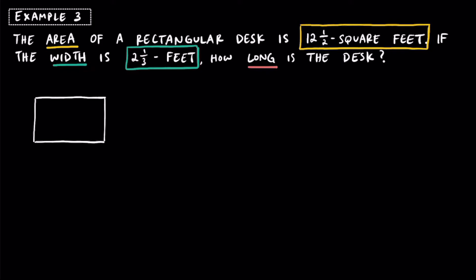We have a rectangular desk, so I'm drawing a rectangle. The area is the space inside — it's a two-dimensional measurement — and we know that's 12 and a half square feet. The width is how wide something is, labeled W, and we're told that's 2 and one third feet. The question is how long this desk is — the length goes across the longer side. Most people think the length is the longest side, so I'm going with that.